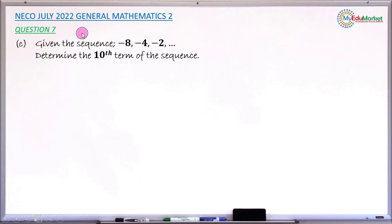This is NECO July 2022 General Mathematics Paper 2, and we are answering question number 7c.